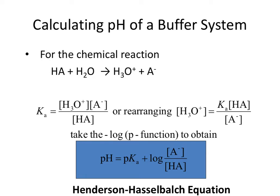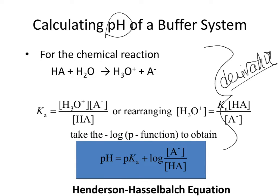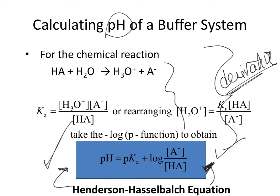To calculate the pH of a buffer system, there's the Henderson-Hasselbalch equation. The derivation is shown here, but you don't need to memorize it. When you recognize a buffer problem, just pull out the Henderson-Hasselbalch equation and plug and chug. Some textbooks present buffer calculations as very complex and confusing, but there's absolutely no need — just use Henderson-Hasselbalch.